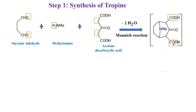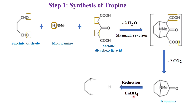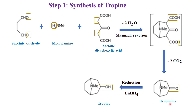This undergoes decarboxylation. On decarboxylation, the 2 carbon dioxide molecules would be removed and we are getting tropinone. This is called tropinone. Now we are going for reduction by means of lithium aluminium hydride. The ketone undergoes reduction and is converted to a secondary alcohol, and that is called tropine. So in step 1, succinic aldehyde, methylamine, and acetone dicarboxylic acid undergo Mannich reaction, 2 molecules of water are removed, cyclization occurs giving tropinone, and reduction gives tropine.